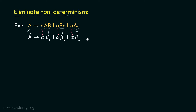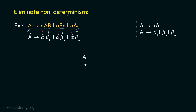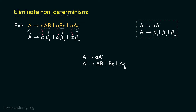To eliminate the non-determinism, we need to perform left factoring — that is, we will factor out the common prefixes of all these production rules. So, from non-terminal A, we produce the common prefix, which is lowercase a, followed by a new non-terminal, say A prime. From A prime, we generate the betas: A prime can be rewritten as AB — that is beta 1 — or b small c — that is beta 2 — or A followed by small c — that is beta 3.